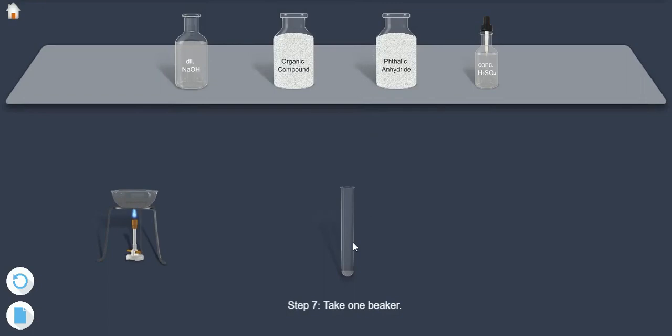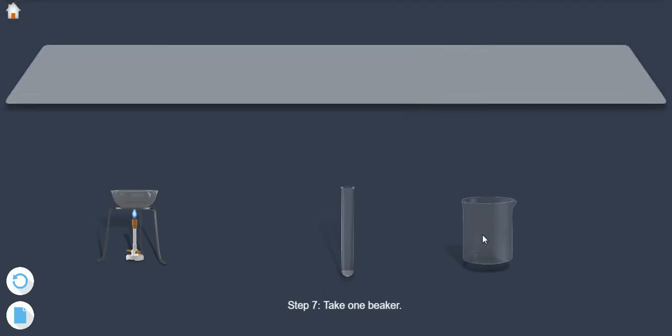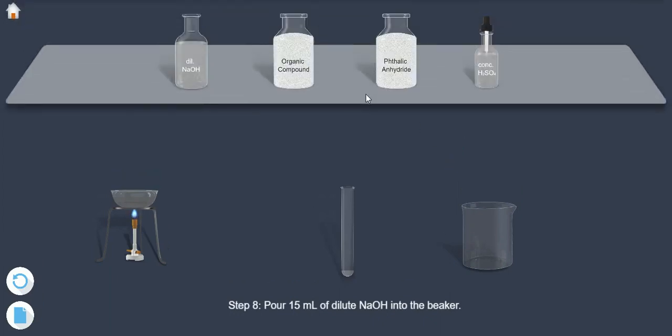Step 7: Take one beaker. Step 8: Pour 15 ml of dilute NaOH into the beaker.